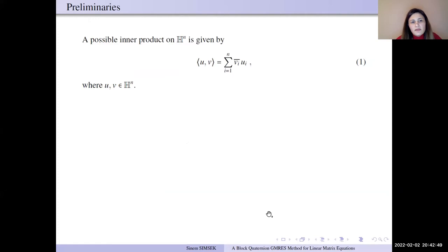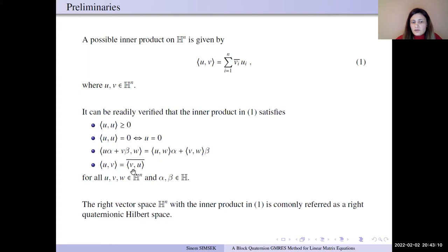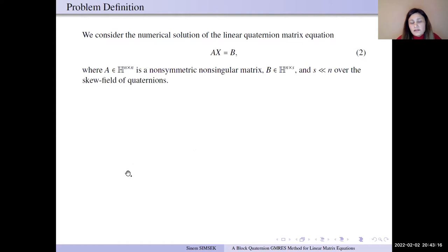A possible inner product is given by this form. These inner products satisfy four properties like this. With the inner product, we can say that quaternions is right quaternion Hilbert space.